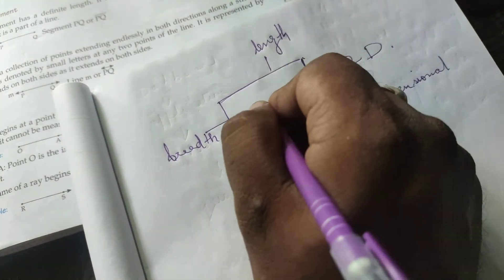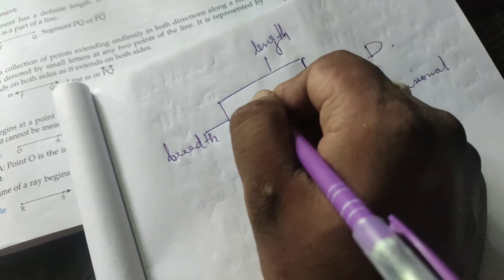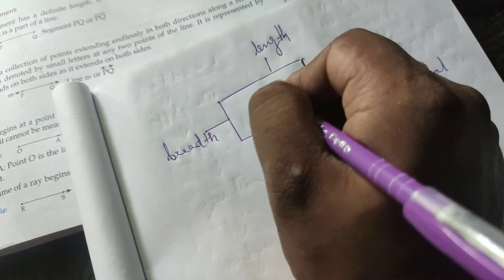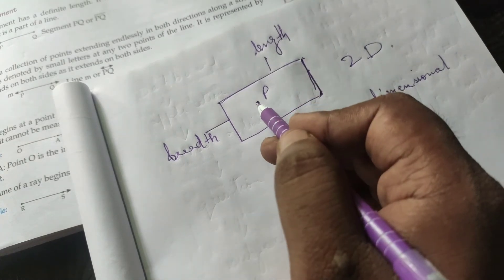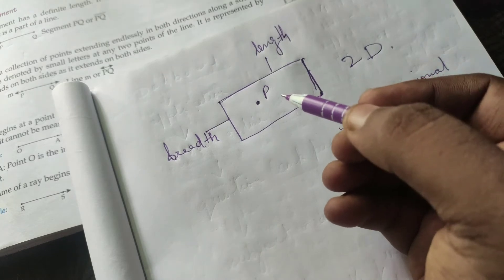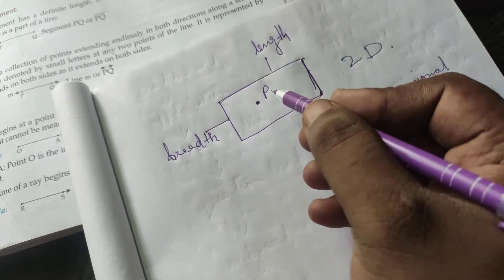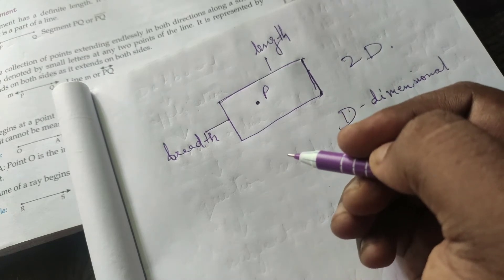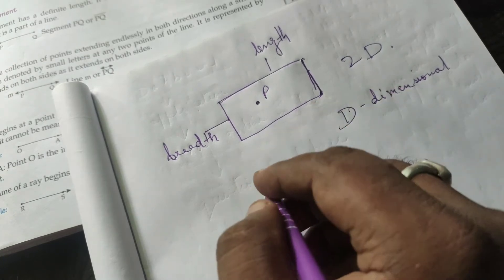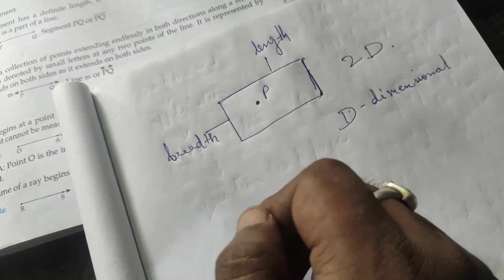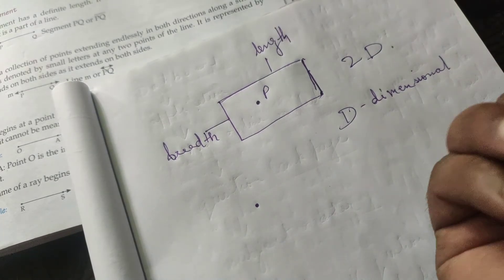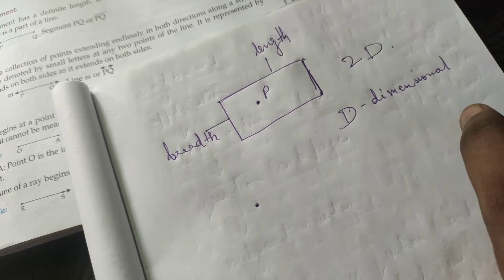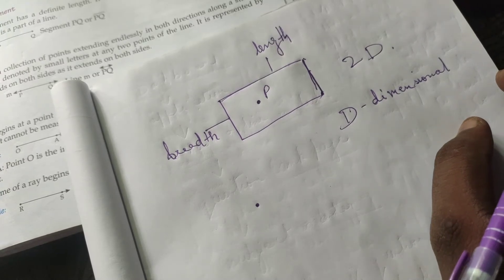Next comes point. Suppose this is a plane and I have marked a position on it with point P. A point is a position in a given space. It is represented by a dot on paper. It has no length and no breadth. A capital letter is used to name a point.